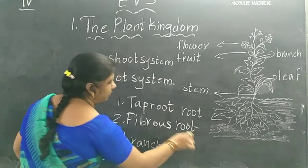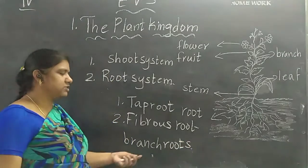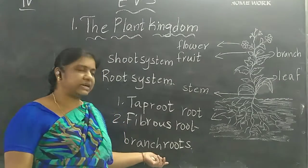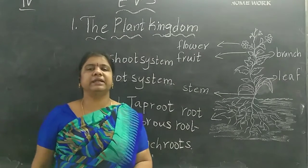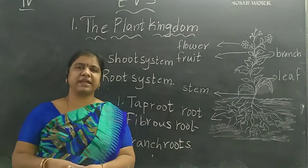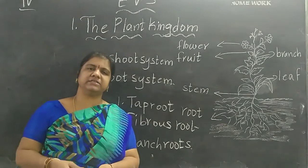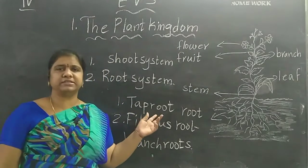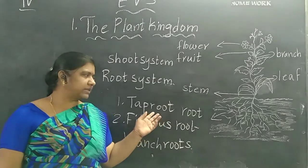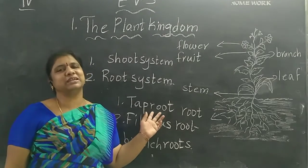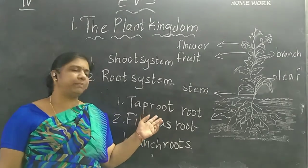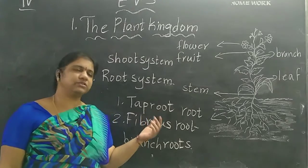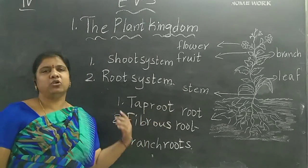Examples of tap root include mustard, turnip, sunflower, carrot, and radish. These are the examples of tap root.